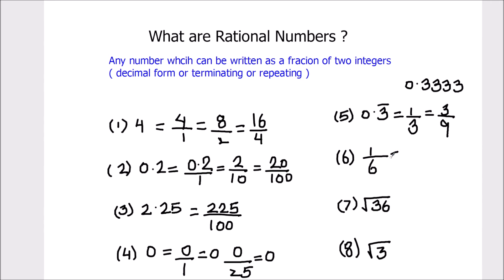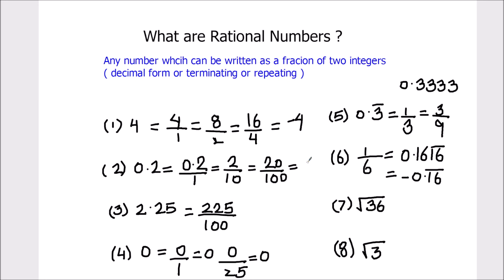Next we have 1 over 6. It is a fraction, and 1 over 6 can be written as 0.1̄6̄ — this type of repeating decimal is also a rational number. Even if it is a negative number, such as negative 0.1̄6̄, it is still a rational number. All these numbers can also be negative — for example, negative 4 and negative 0.2 are both rational numbers. Note that 0 over 1 is rational, but 1 over 0 is not a rational number.